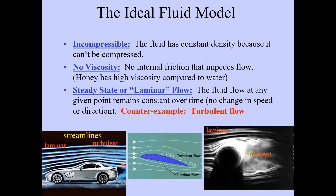Behind the car, the nice clean laminar layers of airflow are distorted and we see turbulence — laminar flow is lost behind the car. When air flows over an airplane wing, we can see examples of laminar flow underneath the wing and above it, but right along the surface of the wing there might be some turbulent flow. We're not going to deal with turbulent flow in this course.